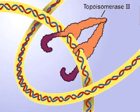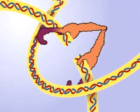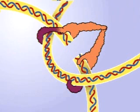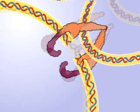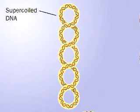Topoisomerase II enzymes do the same thing but with both strands of the double helix. Topoisomerase II cuts both strands of a double-stranded DNA and passes another double strand through the break and then reseals the break.